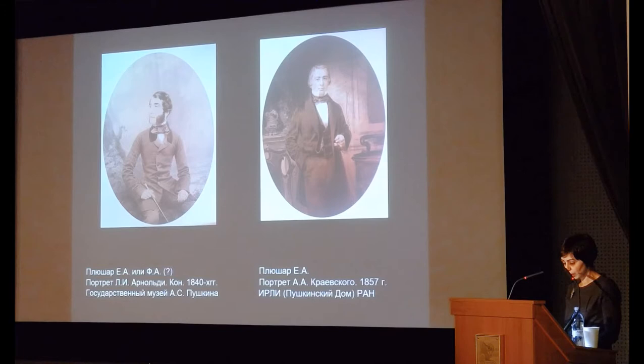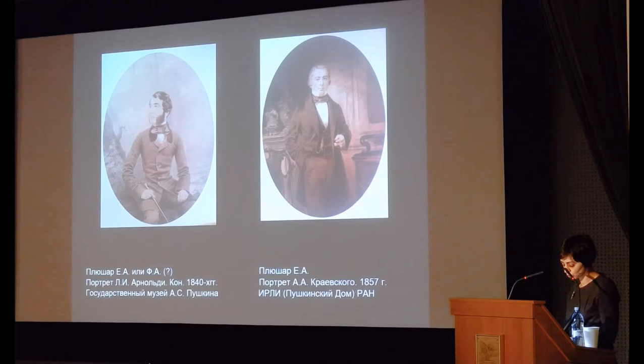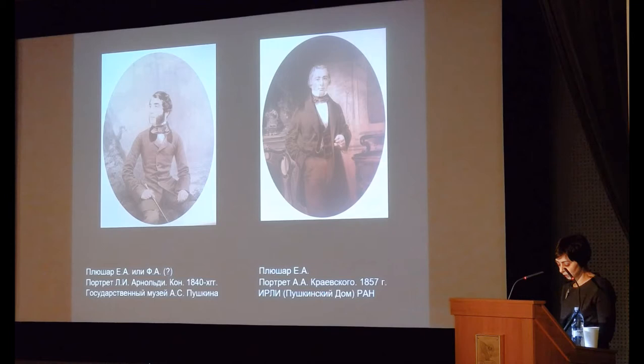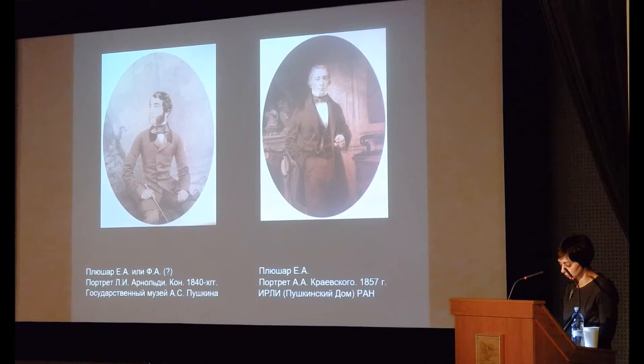I would like to illustrate this using the portrait of Arnoldi from the State Pushkin Museum. There are two inscriptions on the reverse side: one says the portrait was made in 1846, and the second states it was made in the Plushar photo studio five years later. Historical evidence shows that Fyodor Plushar launched his photo studio in December 1853, and the photo studio of his brother Evgeny Plushar turned up in Pavlovsk in 1855 only — so that makes us doubt the owner's dating.